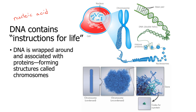To prevent DNA from getting all tangled up into a mess that's hard to access, our cells wrap that DNA around proteins. And by wrapping it around proteins and wrapping it again, you can form these structures that are called chromosomes.